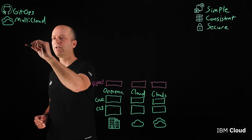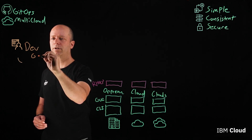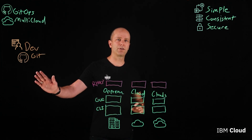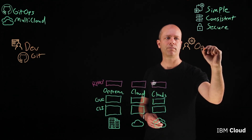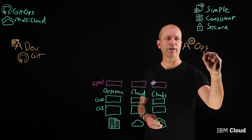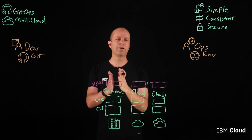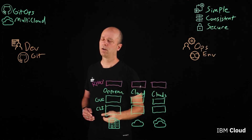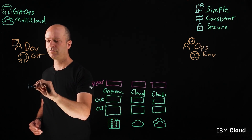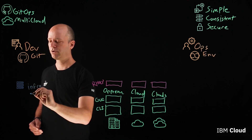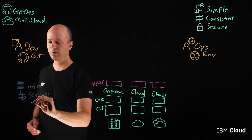So you have your dev team, and they are used to doing all of their work inside of Git — source code is all managed within Git. And you have your ops team, and they are in charge of managing all of your different environments. So how do we bring dev and ops together? Well, we can set up repositories for infrastructure, for services, and for the applications.